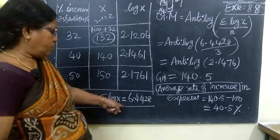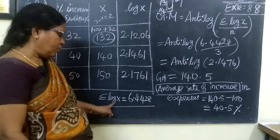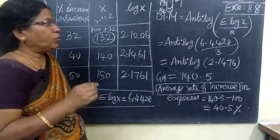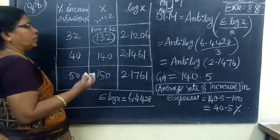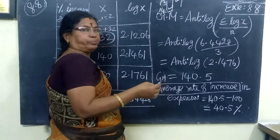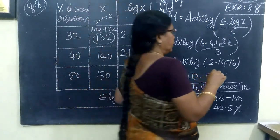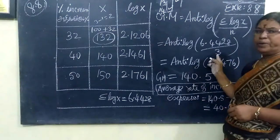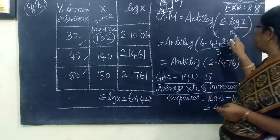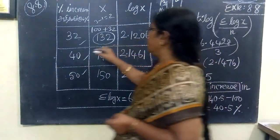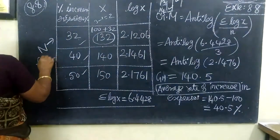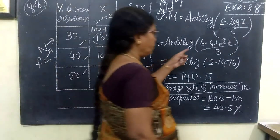After finding all these values, you add them, so sigma log x equals 6.4428. The geometric mean formula is antilog - here there is no frequency, ungrouped data, so we divide the summation by the number of observations, which is 3. We use small n when there's no frequency, capital N when we have frequency. So divide it.